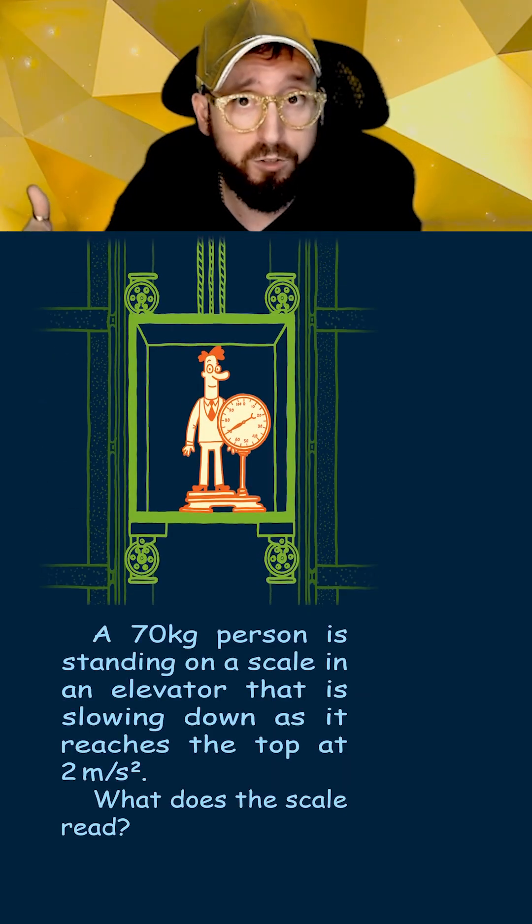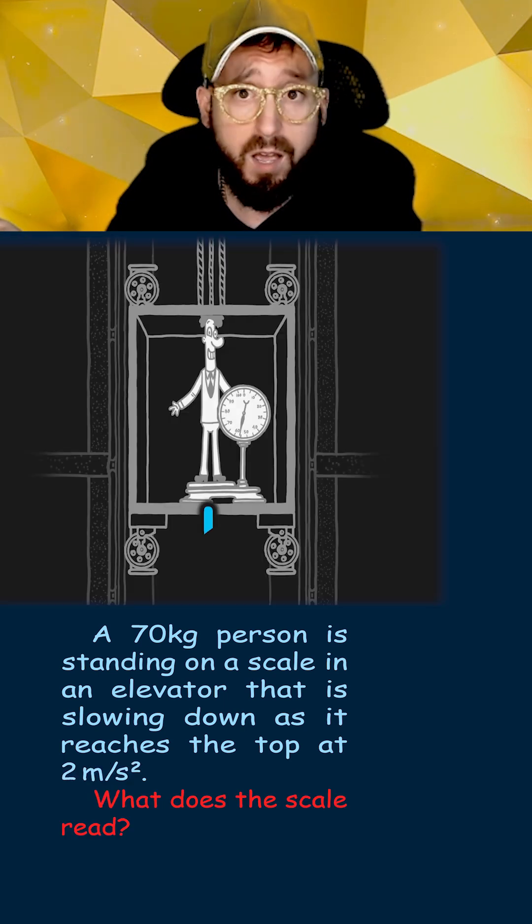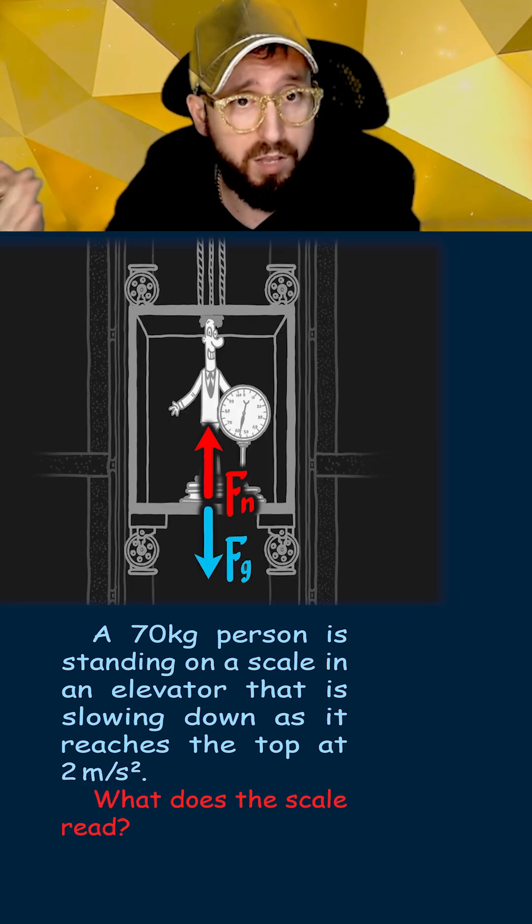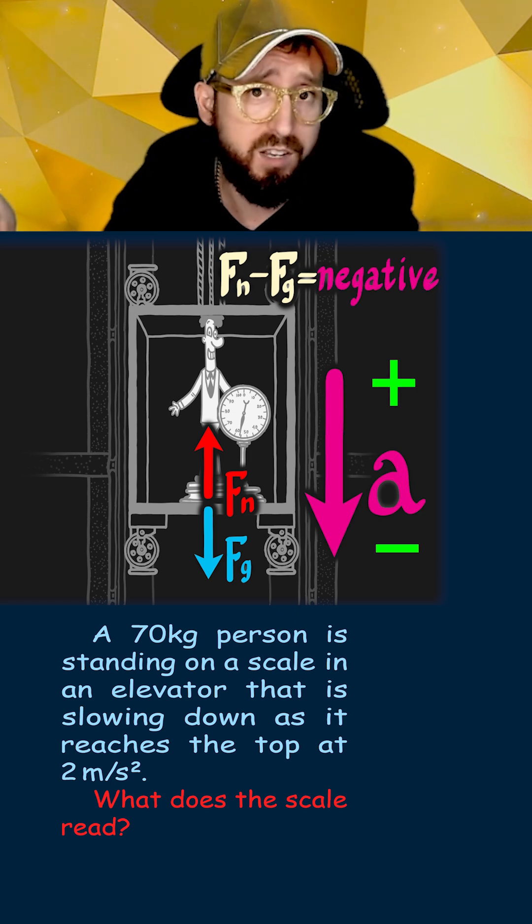Now let's say that the elevator starts slowing down as it reaches the top, such that it is decelerating at 2 meters per second squared. Again, we draw our force diagram with the same force of gravity. However, this time the acceleration is negative, because the velocity is decreasing.